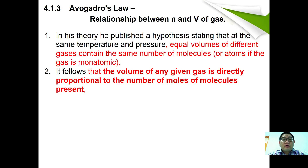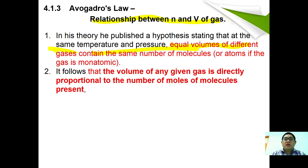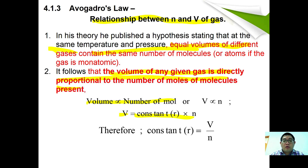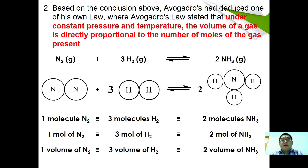Avogadro's law relates the number of moles to the volume of gas. Avogadro stated that equal volumes of different gases contain the same number of molecules under the same conditions, and that the volume of any gas is directly proportional to the number of molecules present. Therefore V is directly proportional to n (number of moles), giving V = R × n, and at constant pressure and temperature, V₁/n₁ = V₂/n₂.